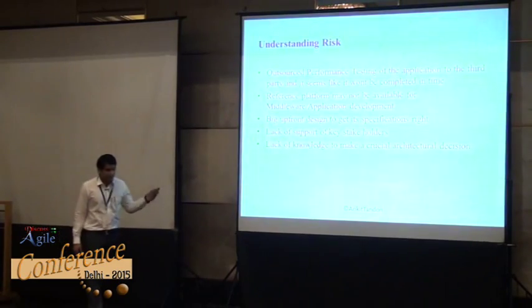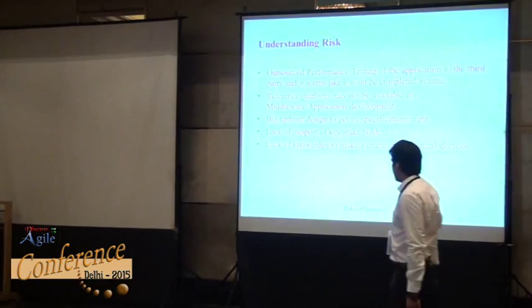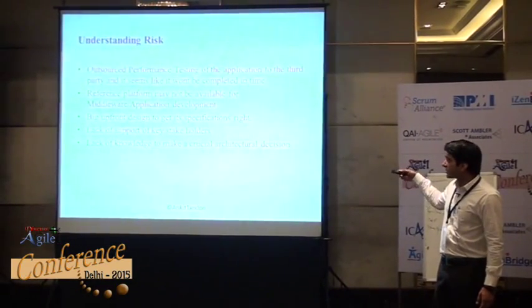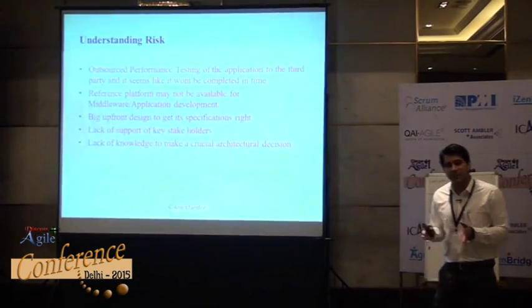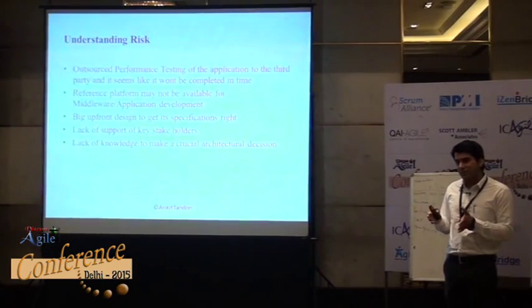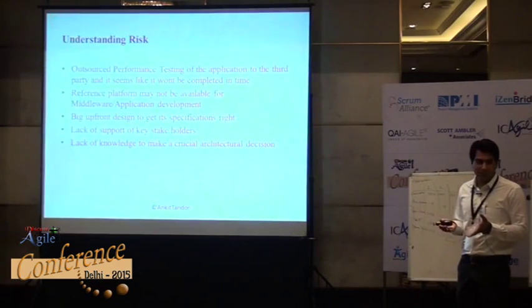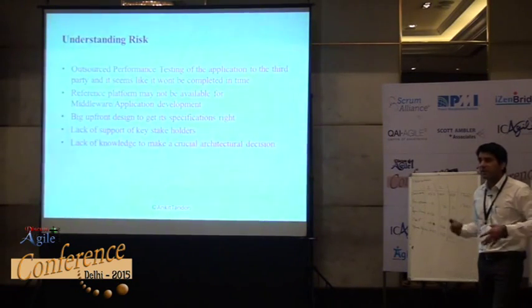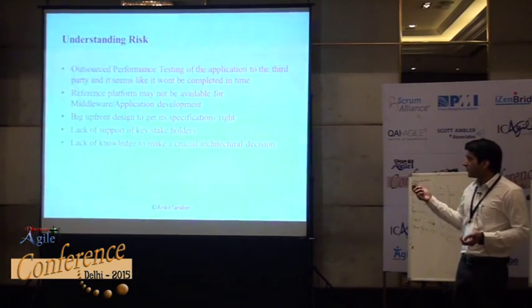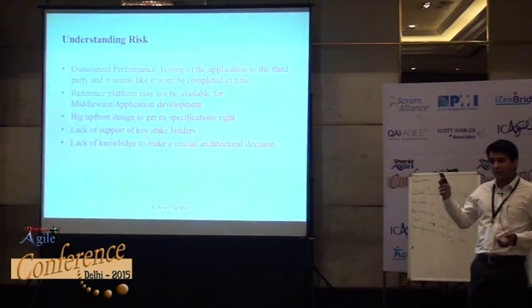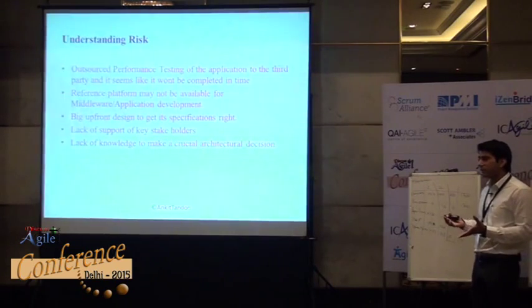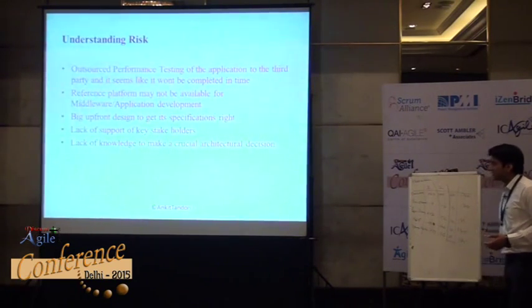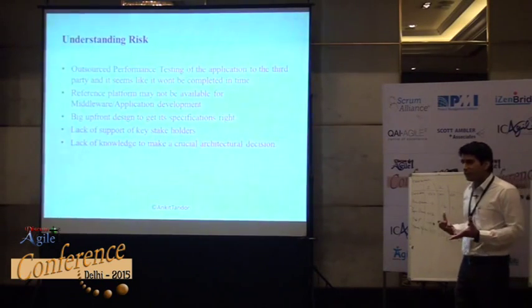Here are a few examples taken from one of my project's risk registers, with references removed. These are examples of risk that can happen in a project. For instance, we're two years into a project and we've outsourced performance testing to a third party — there's a risk they might not deliver on time. Or big upfront design to get specifications right — we keep hearing we shouldn't do that, which is again a risk. Lack of support from key stakeholders — not only the customer but internal stakeholders like POs, sales, or marketing — and lack of knowledge to make crucial architectural decisions.